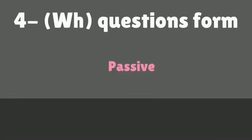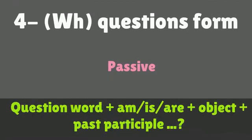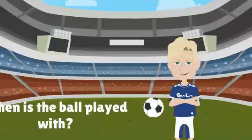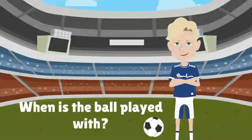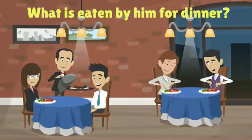WH-Questions Passive: Question word plus am, is, or are plus object plus past participle. Examples: When is the ball played with? What is eaten by him for dinner? Who are cats fed by?